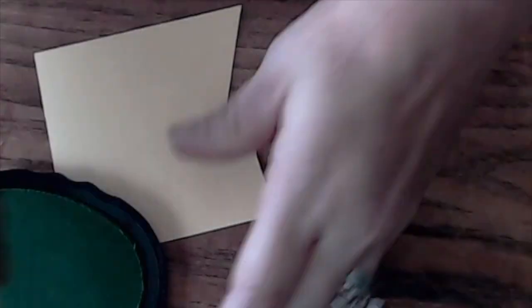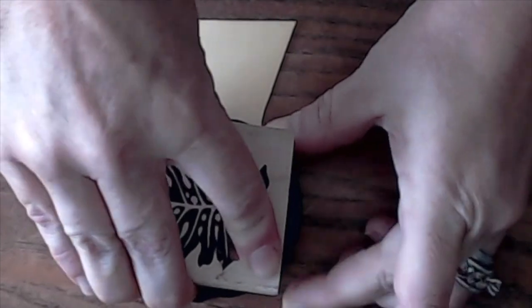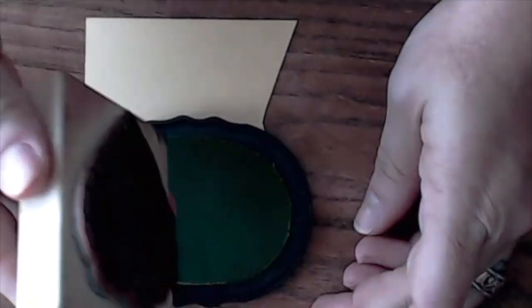Stamp Judykin's philodendron rubber stamp with green ink onto the pale yellow cardstock, and fussy cut around the leaf.